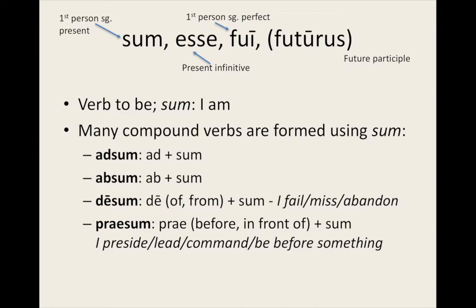Furthermore, 'sum' gives us many compound verbs. These four are just a few, and all of them are formed using a preposition as the prefix. 'Adsum', which is the preposition 'ad' meaning 'to' or 'towards' plus 'sum', translates as 'I arrive', 'I attend', 'I am present'. 'Absum', which comes from 'ab' meaning 'away' or 'from', has the English translation 'I am away', 'I am absent', or 'I am distant'. 'Desum' and 'praesum' are two other verbs formed by adding prefixes to 'sum'.